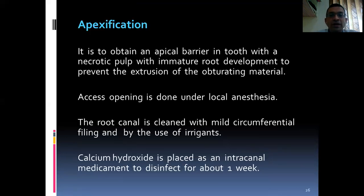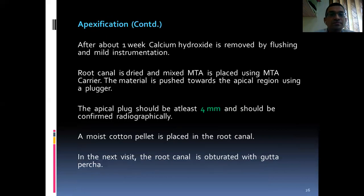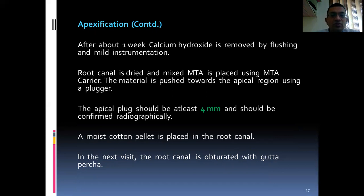Apexification: it is used to obtain an apical barrier in a tooth with a necrotic pulp with immature root development, to prevent extrusion of the obturating material. Access opening is done under local anesthesia. The root canal is cleaned with mild circumferential filing and by the use of irrigant. Calcium hydroxide is placed as an intracanal medicament to disinfect for about one week, then removed by flushing and mild instrumentation. The root canal is dried and mixed MTA is placed using an MTA carrier, pushed toward the apical region using a plugger. The apical plug should be at least 4 mm and confirmed radiographically to ensure it is not extruded outside. A moist cotton pellet is placed in the root canal. In the next visit, the root canal is obturated with gutta-percha material.